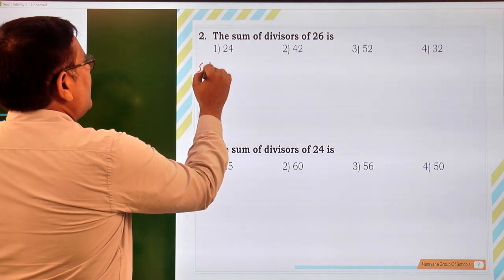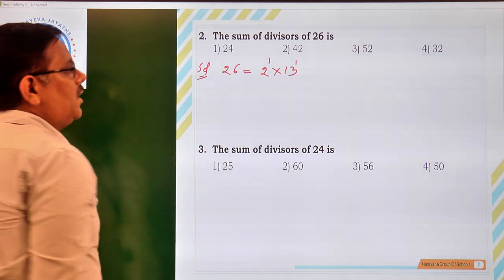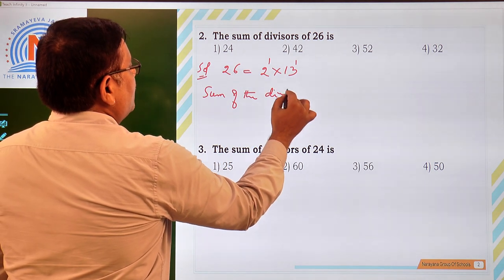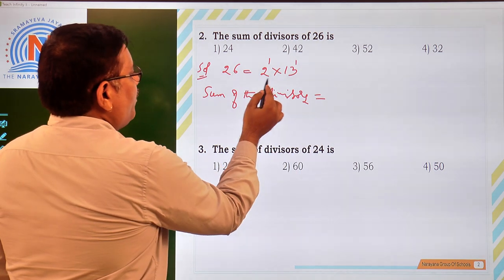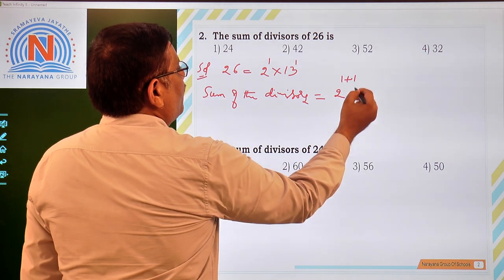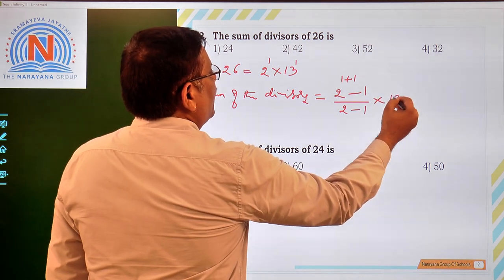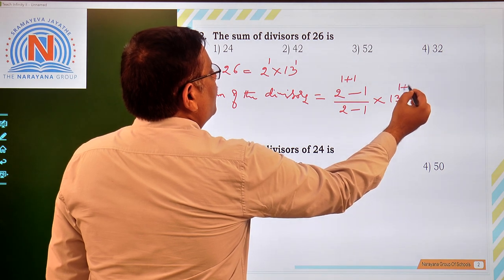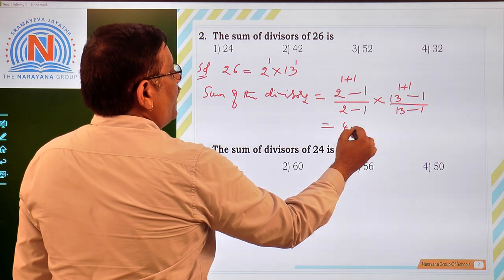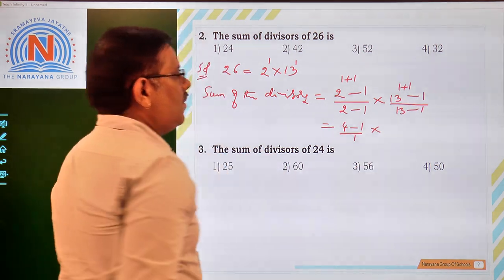The sum of the divisors of 26. 26 we have to write as product of prime numbers, 2 times 13, 2 power 1 into 13 power 1, that is 26, so it is a standard form. So what to write now? Sum of the divisors. What is the formula now? p1 is 2, p2 is 13, so p1 power 1 plus 1 minus 1 by p1 minus 1 into p2 power 1 plus 1 minus 1 by 13 minus 1. So that is 2 square minus 1, 4 minus 1 by 1 into it is 13 square, that is 169 minus 1, that is 168.